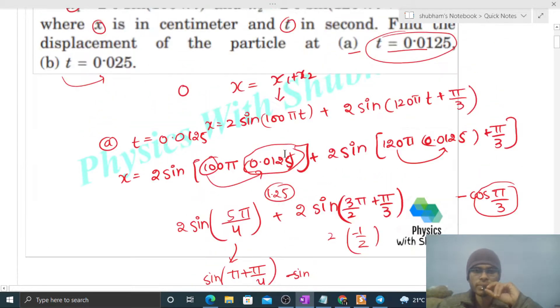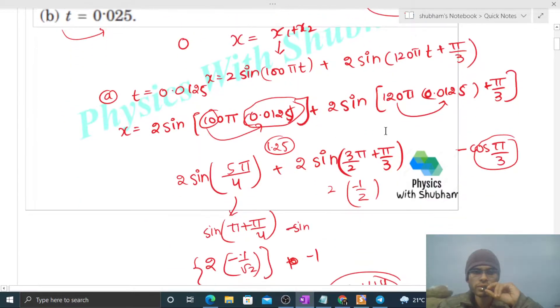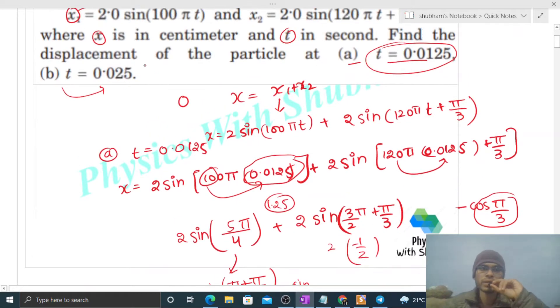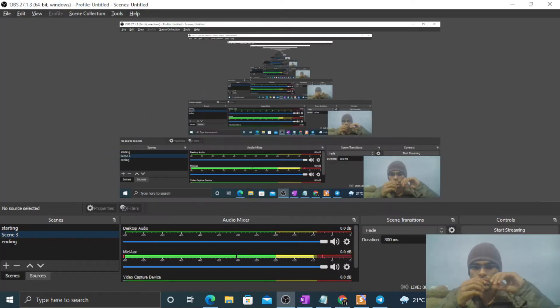This way we can solve case b. Here we have time given as 0.025. Just follow the same procedure. Put the time value and simplify it. I think you can do this one yourself. Let me know if you still have any confusion. We can discuss further. Okay, keep working hard. Best of luck. Bye.